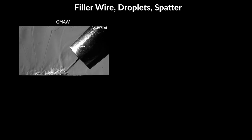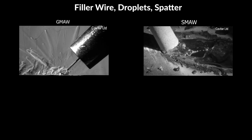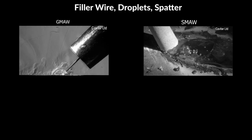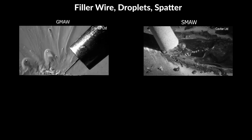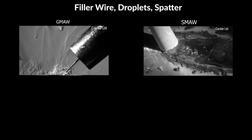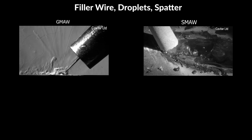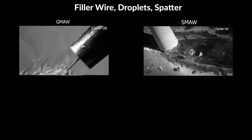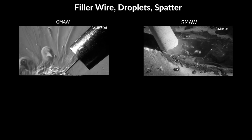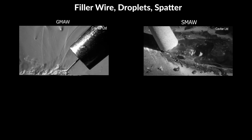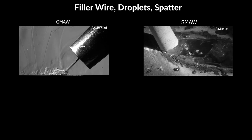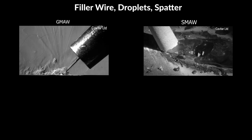2. Filler Wire, Droplets, and Spatter. Filler wire: GMAW and SMAW use a consumable wire that is fed through the welding gun at an even rate. The electric arc forms between the wire electrode and the workpiece. The material of the wire depends on the material of the workpiece, as well as other features of the welding process, and it affects the quality of the weld.